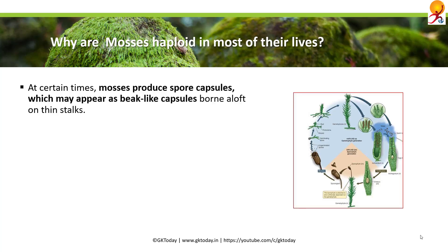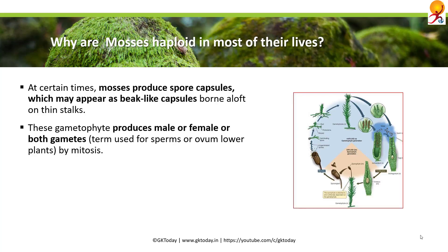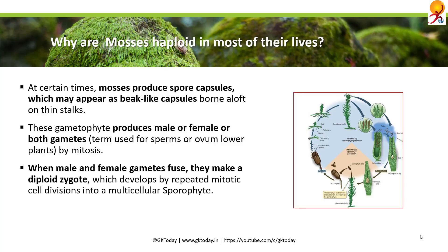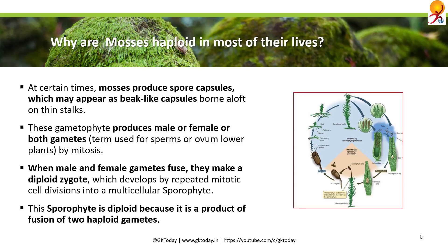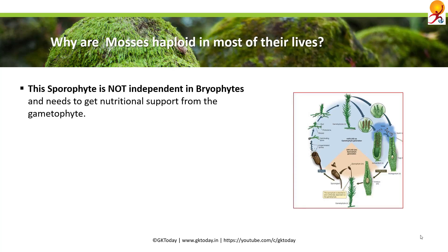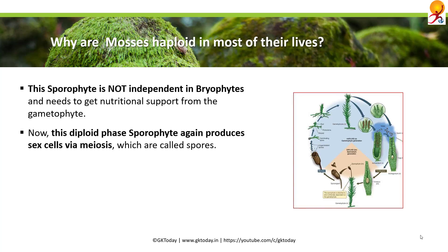At certain times mosses produce spore capsules, which may appear as beak-like capsules borne aloft on thin stocks. These gametophytes produce male, female, or both gametes — gametes being the term for sperm or ovum in lower plants, produced by mitosis. When male and female gametes fuse, they make a diploid zygote, which develops by repeated mitotic cell divisions into a multicellular sporophyte. This sporophyte is diploid because it is the product of fusion of two haploid gametes, giving it two sets of chromosomes. Sporophytes are not independent; they need nutritional support from their haploid sisters, the gametophytes. The diploid sporophyte again produces sex cells via meiosis.